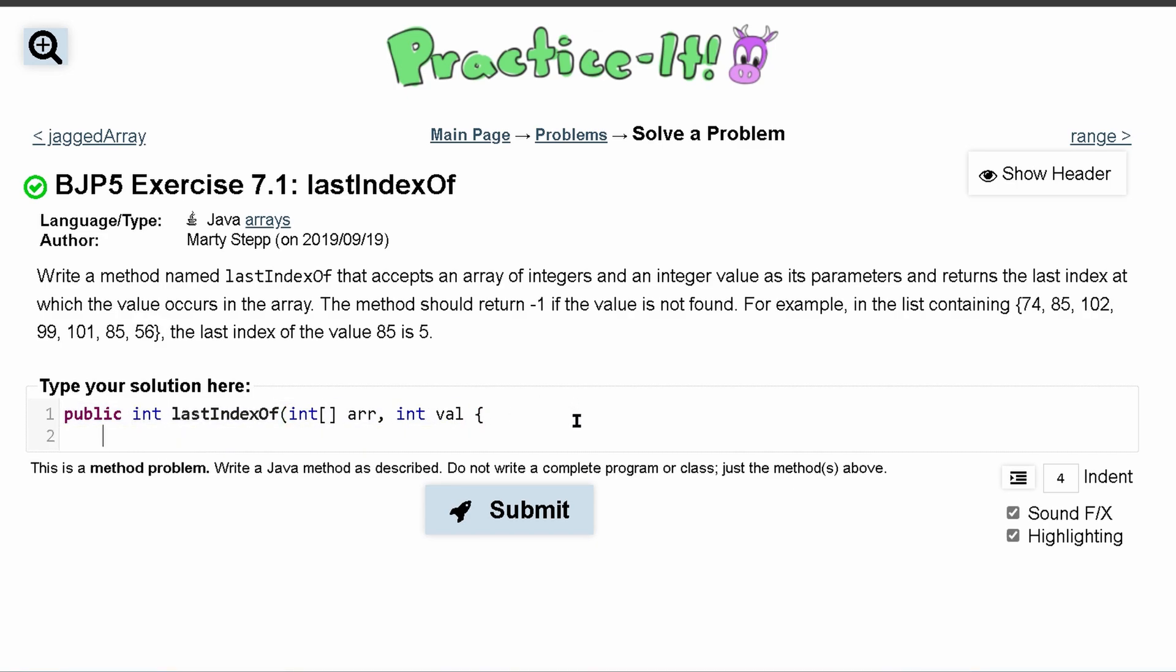Inside of here what we're going to want to do is run through the entire array and compare this value to that to find it. So let's store it inside of this index. What this index is, is basically the index at which this value exists. So if this is the case then we can return this index, otherwise we'll return a negative one.